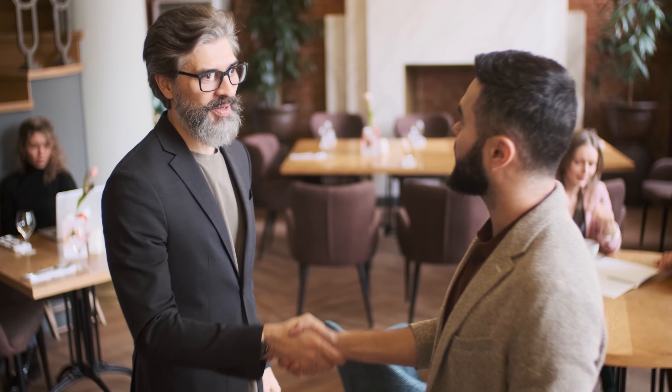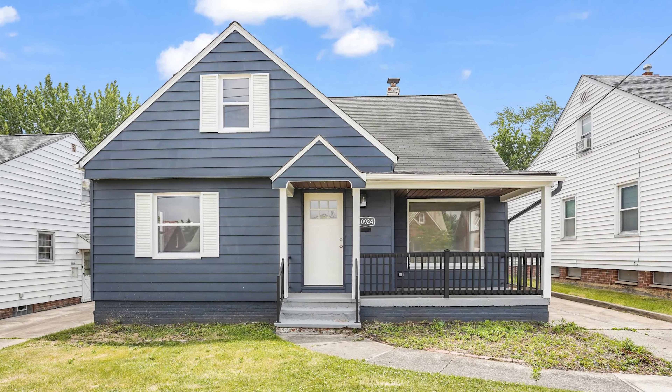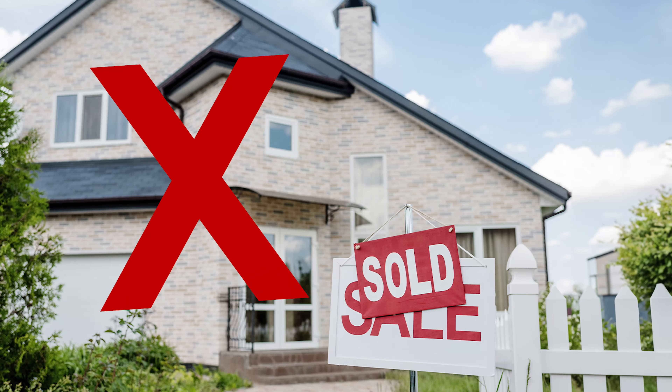Bottom line: if you have a Self-Directed IRA and want to invest in real estate, my recommendation is to do private money lending and joint ventures. If you have a lot of money and can't invest it all in private money lending or joint ventures and want to buy and hold single family rentals or other cash-flowing real estate assets, you can definitely do that within your Self-Directed IRA. I would recommend not doing anything like flipping within your Self-Directed IRA — that doesn't make sense. If you have any questions or comments, please put them in the comments and I will try to answer them. Thank you very much.